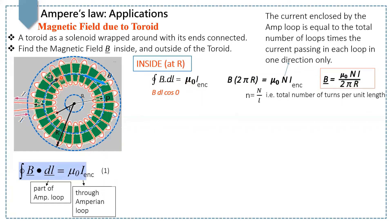Since we are integrating over the whole loop, the integral of dL gives the circumference of the whole circle, which is 2πR. So, replacing the left side, we get B into 2πR equals mu naught N I enclosed, where N is the total number of turns enclosed by this Amperian loop. The current enclosed equals the total number of turns times the current passing in each turn in one direction. This gives the magnetic field B equals mu naught N I over 2πR at distance R inside the toroid.